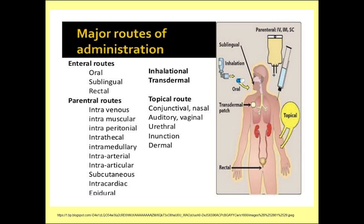Intracardiac: injections given directly into the heart muscles or the ventricles are called intracardiac mode of administration. Epidural mode is provided as a pain relief — analgesic — in the case of labor and childbirth. Under the topical route, conjunctival drugs are administered through the conjunctiva, which is a membrane that lines the eyelids. Then vaginal route: the drug is administered through the vagina, urethral, and inunction. Inunction is the rubbing of the drug in the form of oil or ointment.